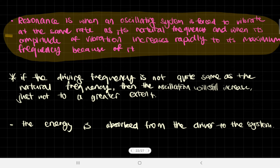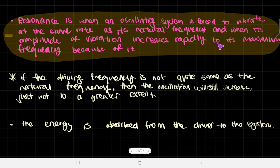Resonance is when an oscillating system is forced to vibrate at the same rate as its natural frequency, and when its amplitude of vibration increases rapidly to its maximum because of it.